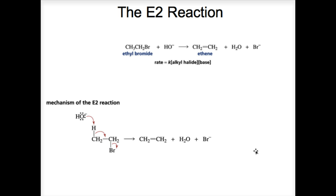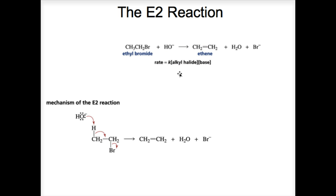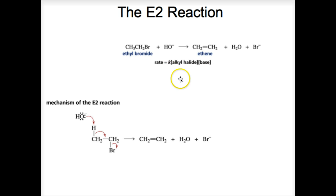The E2 reaction — E means elimination, 2 stands for bimolecular. The reaction of ethyl bromide with hydroxide ion is an example of E2. The rate depends on the concentrations of both ethyl bromide and hydroxide ion, making it second order. In the mechanism, a proton is removed and bromine is eliminated at the same time. The E2 reaction is a concerted one-step reaction with no intermediate — the proton and bromide ion are removed simultaneously.